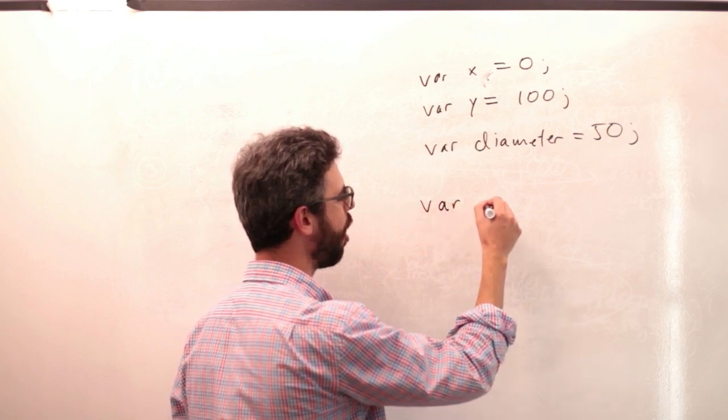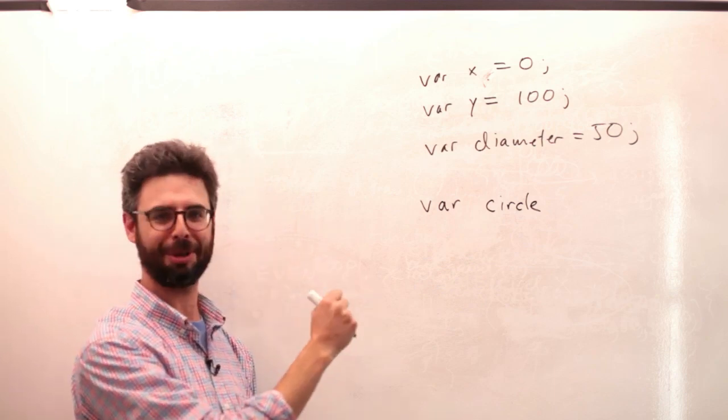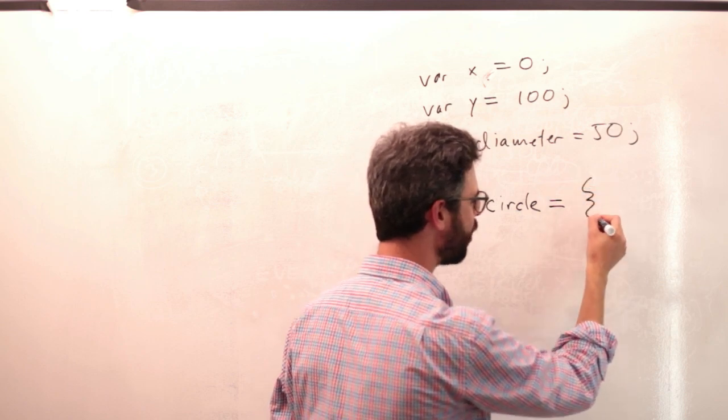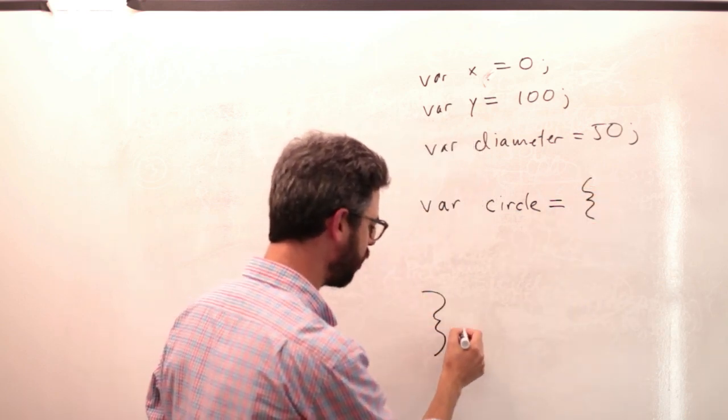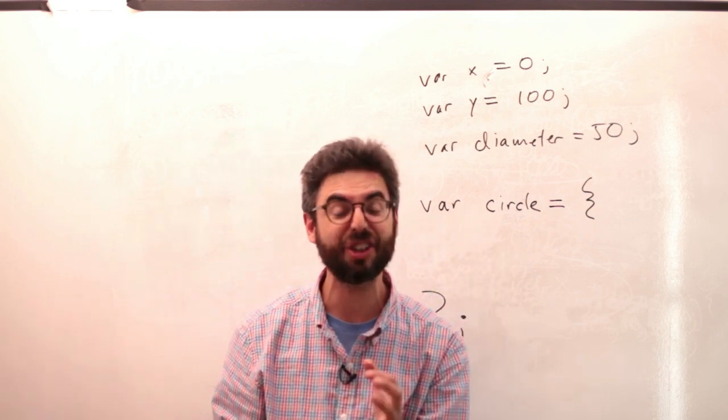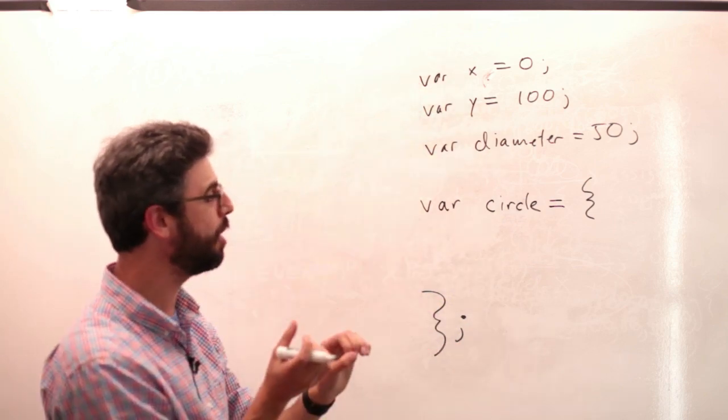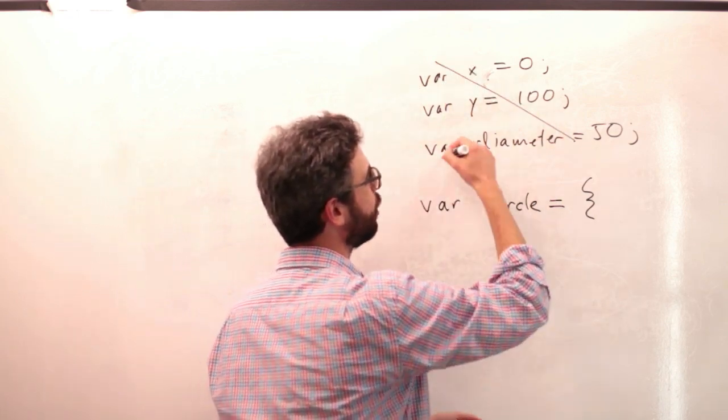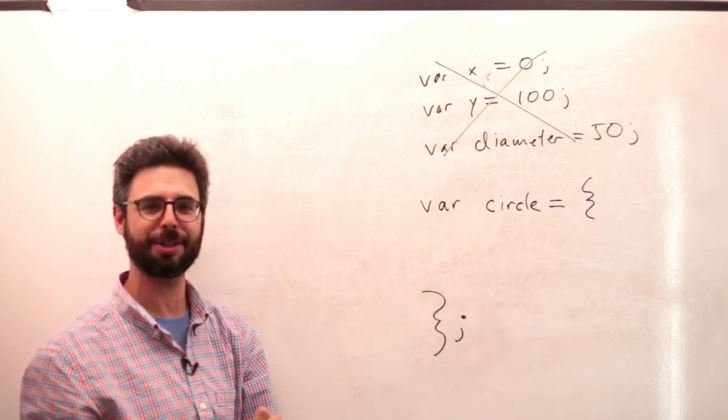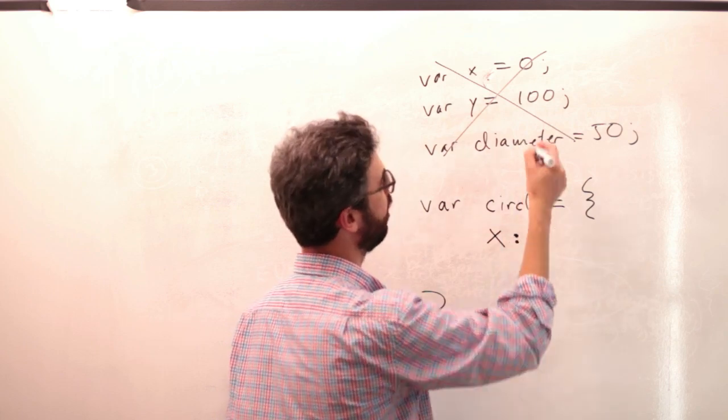And there is a way I could do that. I can say var and I could say circle. So I have this circle on the screen and I'm going to call it a circle. And then what I'm going to do is say equals and I'm going to have an open curly bracket and a closed curly bracket. So circle is now a container. What I would like to do is put those three variables inside of this variable called circle. In order to do that, I'm going to say X colon zero comma.